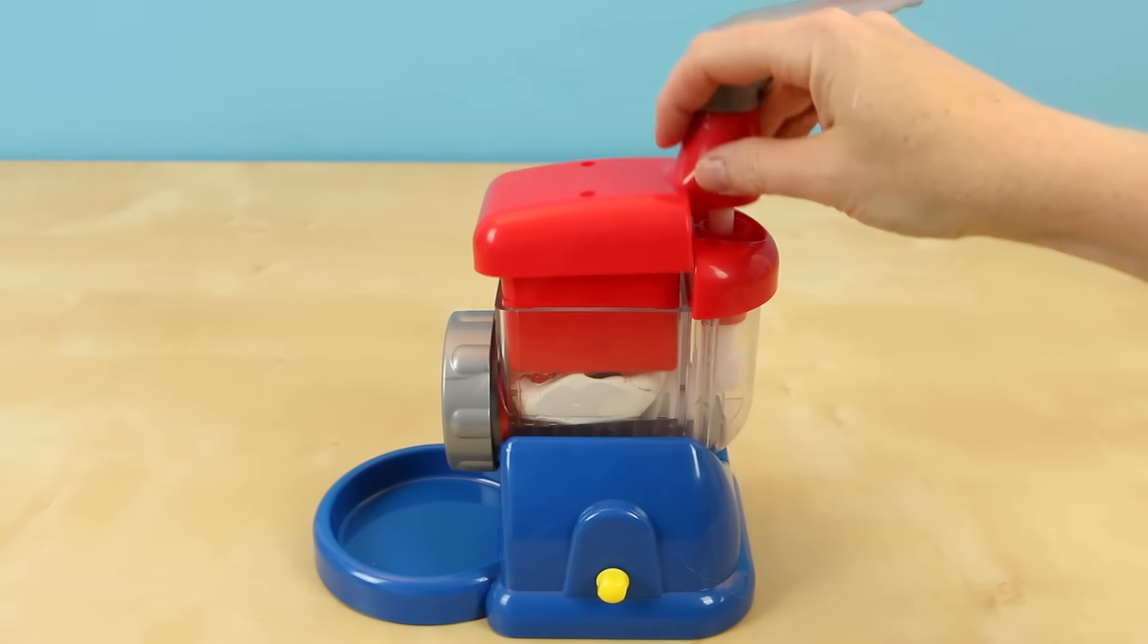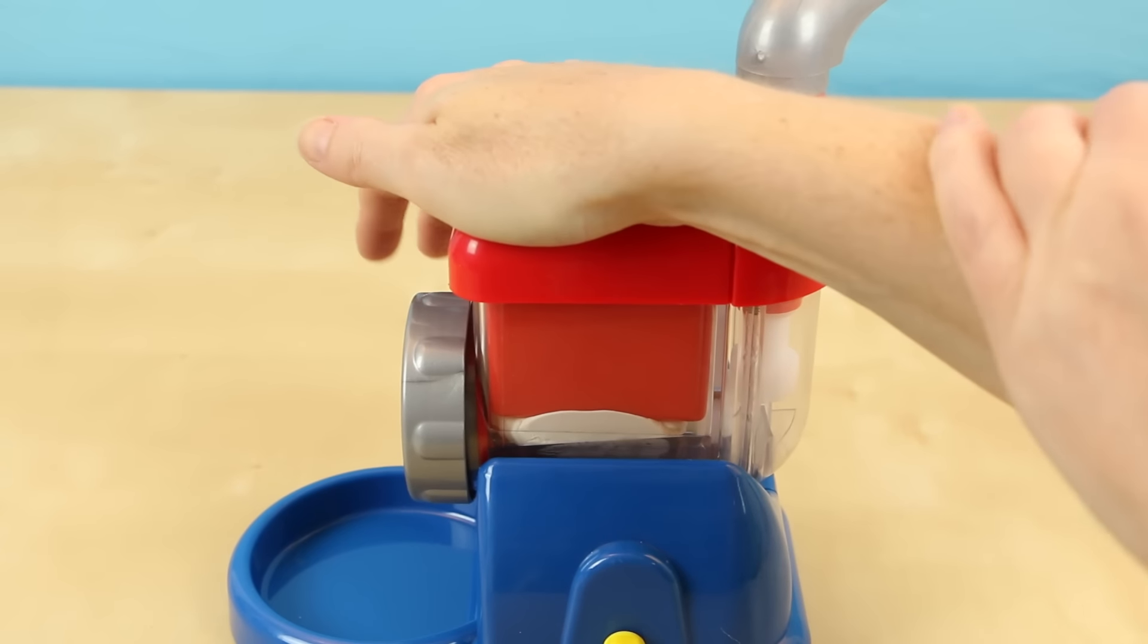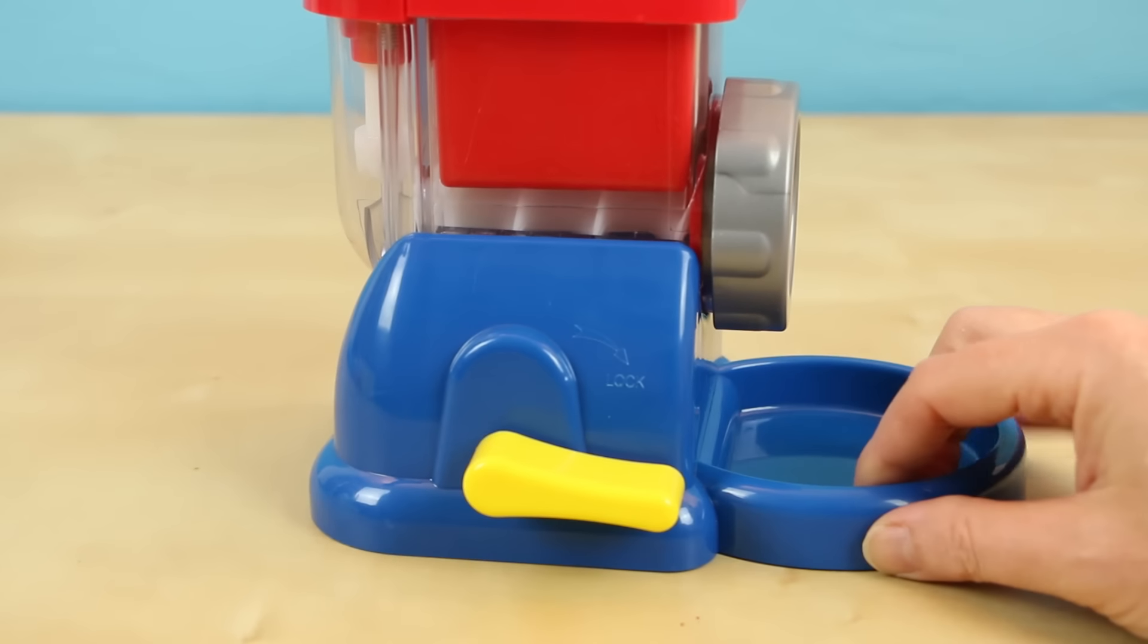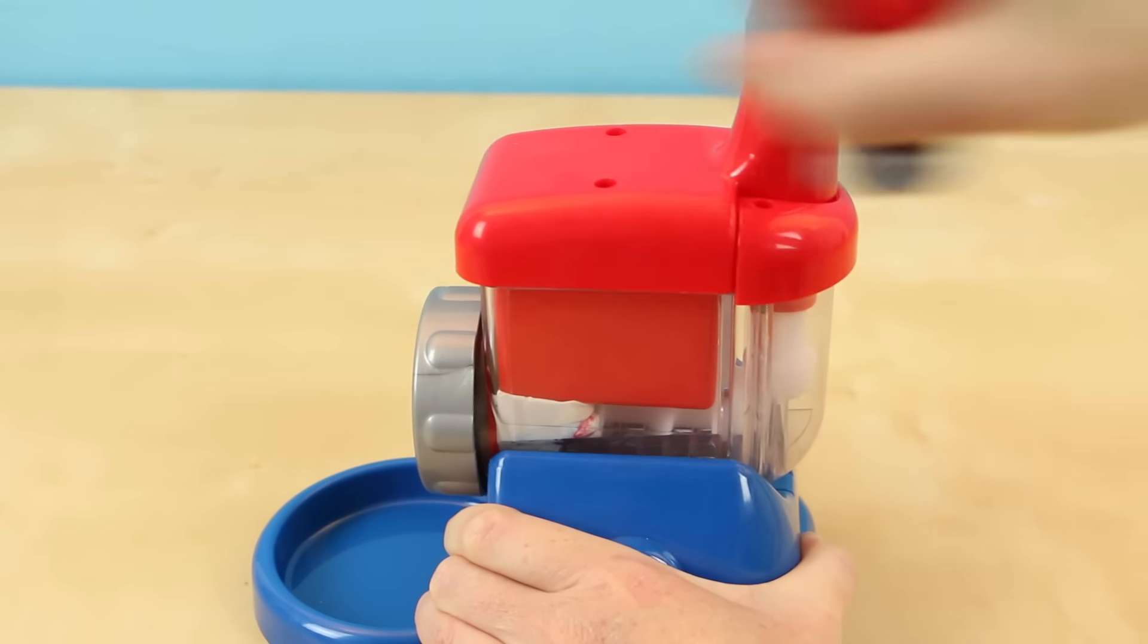Put the lid back on and push it down as far as it can go. Turn the lever into the lock position. This will help your machine stay on your table. Now start turning the crank.